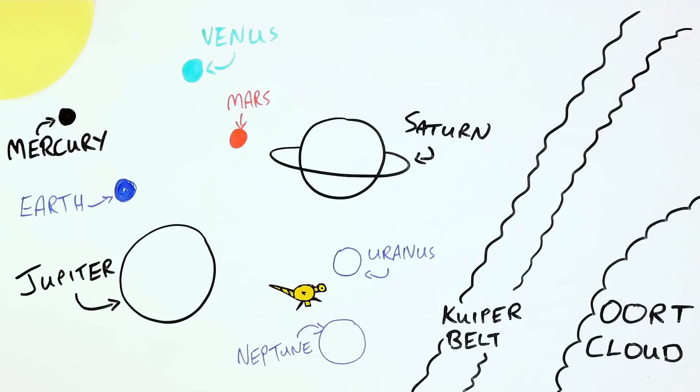The Voyager 1 probe has moved past all of the planets in our solar system, and even past the Kuiper Belt to explore the outskirts of the solar system.